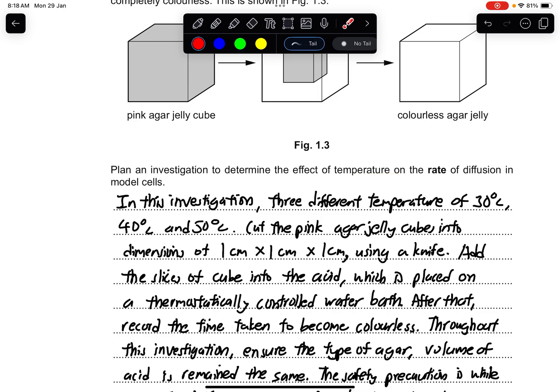This is six marks, so this should be quite simple, especially with the keyword effect of temperature. We always state at least two to three different temperatures being used in this investigation, and then you also provide the method of how you maintain the water temperature by using a thermostatically controlled water bath. The rest of it is just pretty much the same, and for rate of diffusion you want to use time as your dependent variable, measuring how fast the cube is able to become colorless.